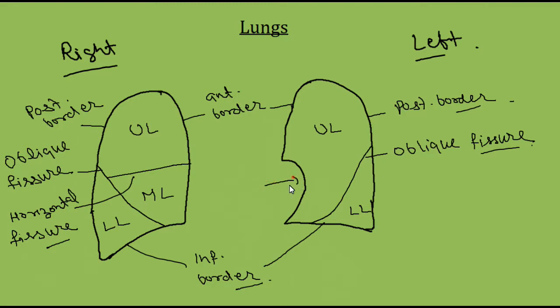On the left side, another feature we have is the cardiac notch, and below we have a tongue-like projection. This is known as the lingula.